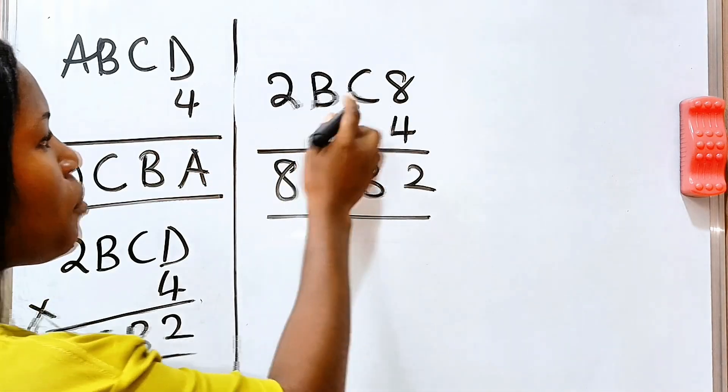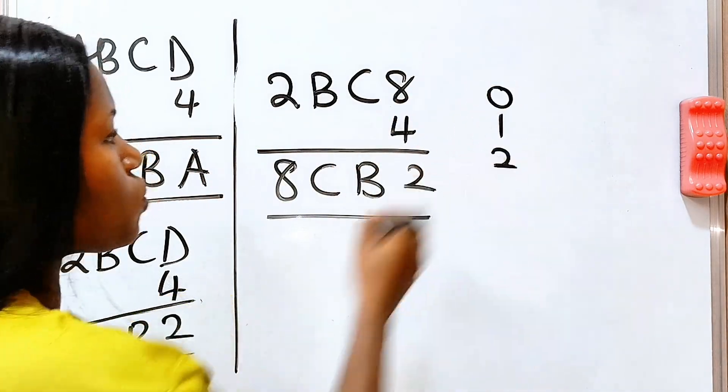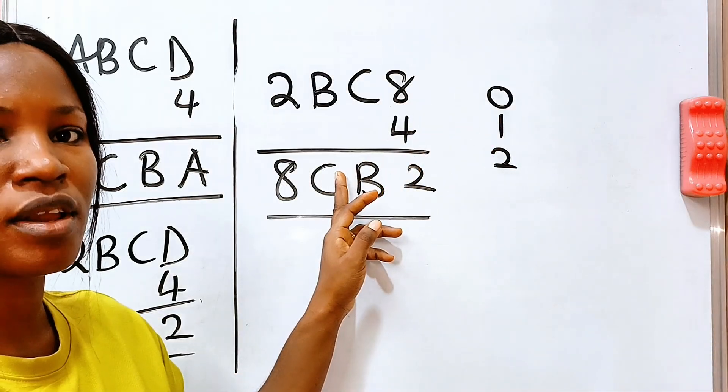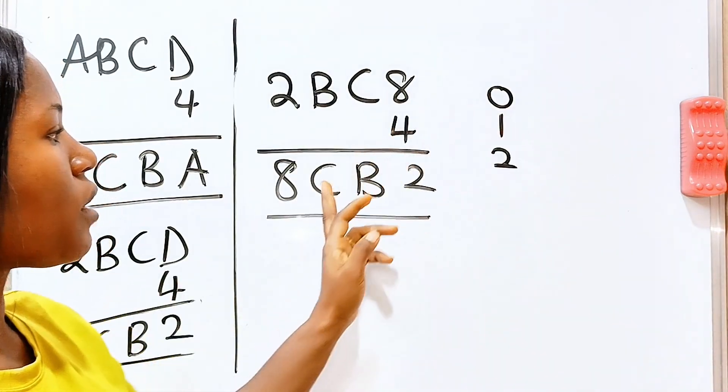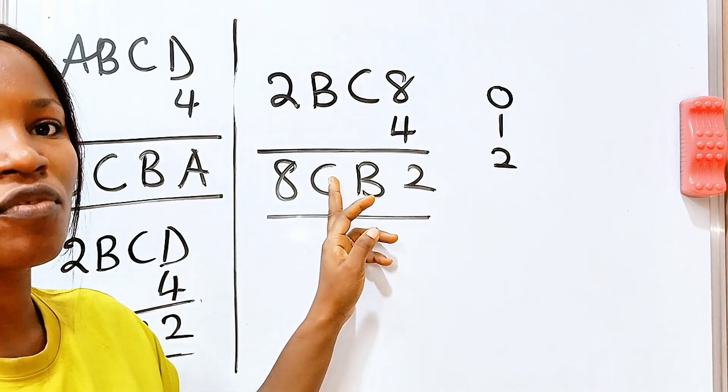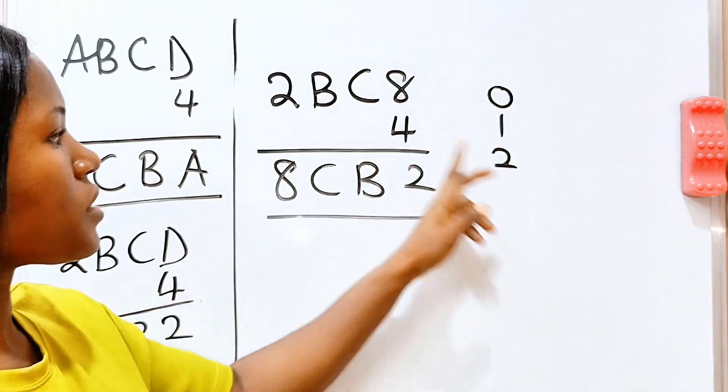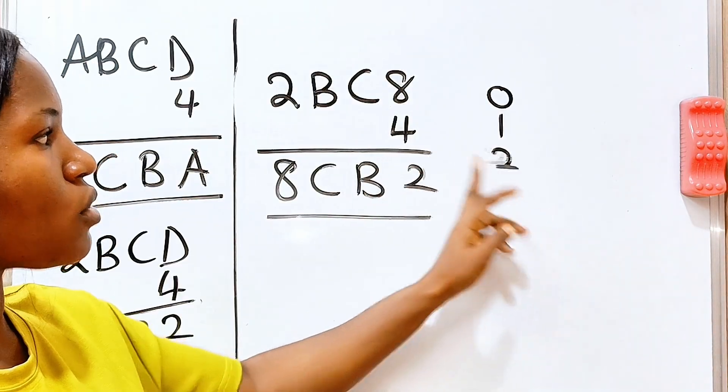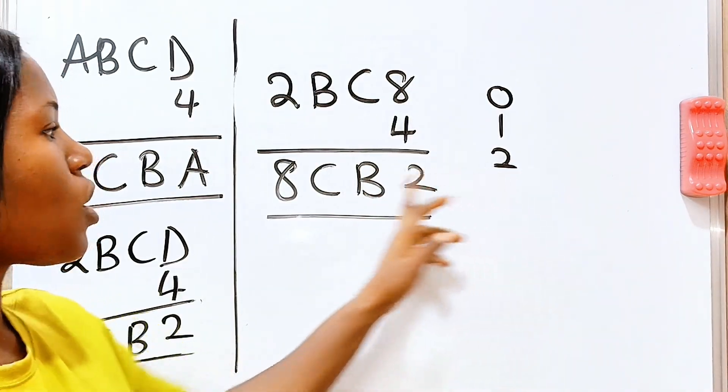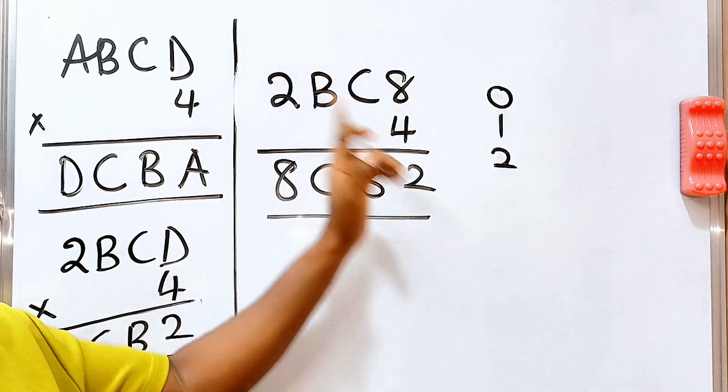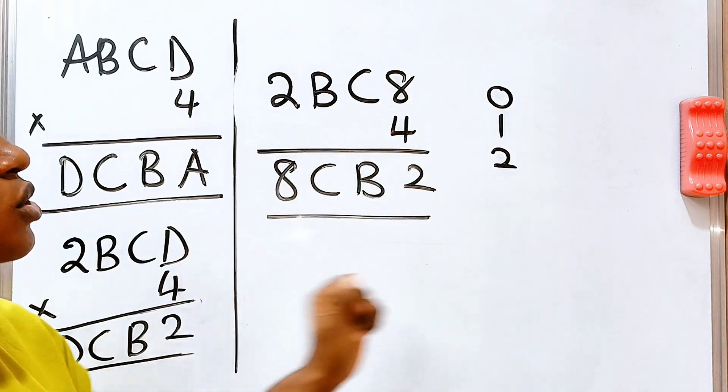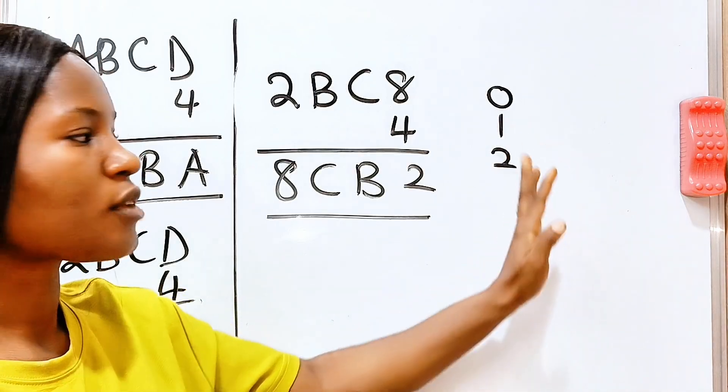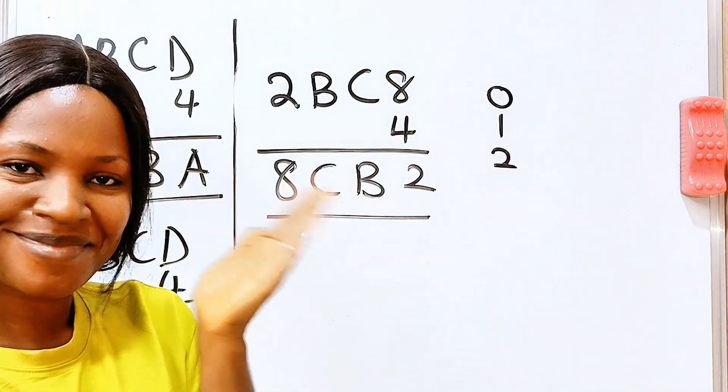So it simply means that B can either be 0, 1, or 2. Because 4 times 0 will give us 0, which is a possible value of C. 4 times 1 will give us 4, which is a possible value of C. 4 times 2 will give us 8, which is a possible value of C. But it cannot be 3 because that way 4 times 3 is 12. We will write 2 and carry 1. But there is no carry here according to what we have here. So it means that our answer is either 0, 1, or 2.